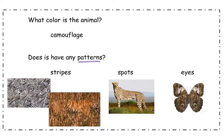Another type of pattern is spots. Cheetahs have spots. Giraffes have different kinds of spots. Leopards — there's lots of animals that have spots. A lot of this pattern can also be used for camouflage. This coloring helps the cheetahs blend right in with the grasses.